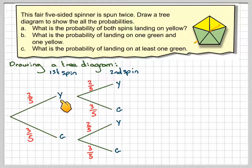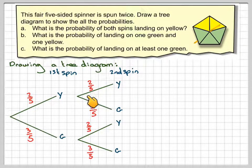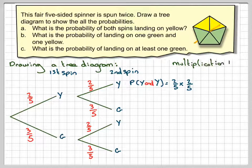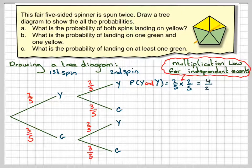Now to get the probability of getting a yellow and a yellow: the first yellow does not affect whether I get a yellow on the second spin, so these two events are independent. Therefore you multiply them together. So the probability of yellow and yellow is going to be two fifths times two fifths, which is the multiplication law for independent events. That gives me four out of 25.